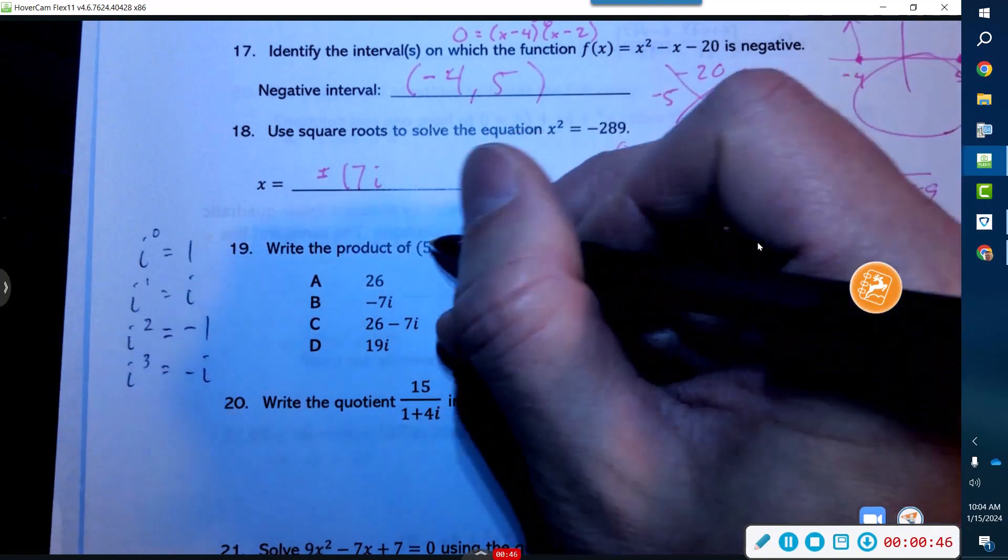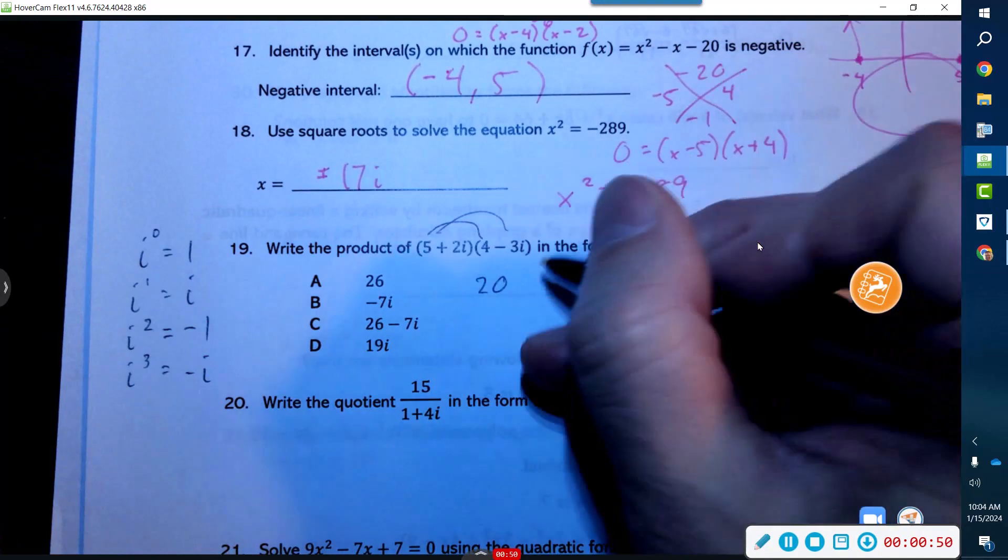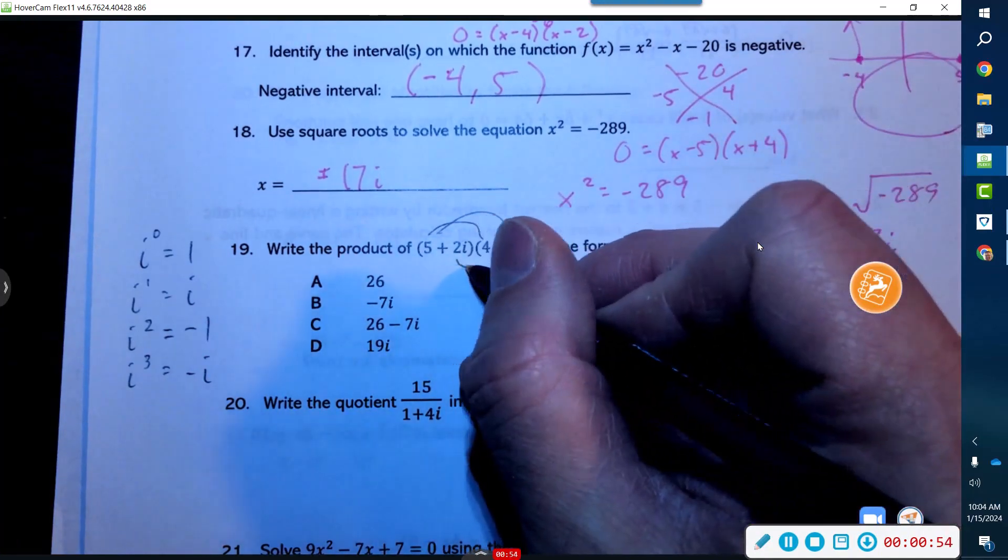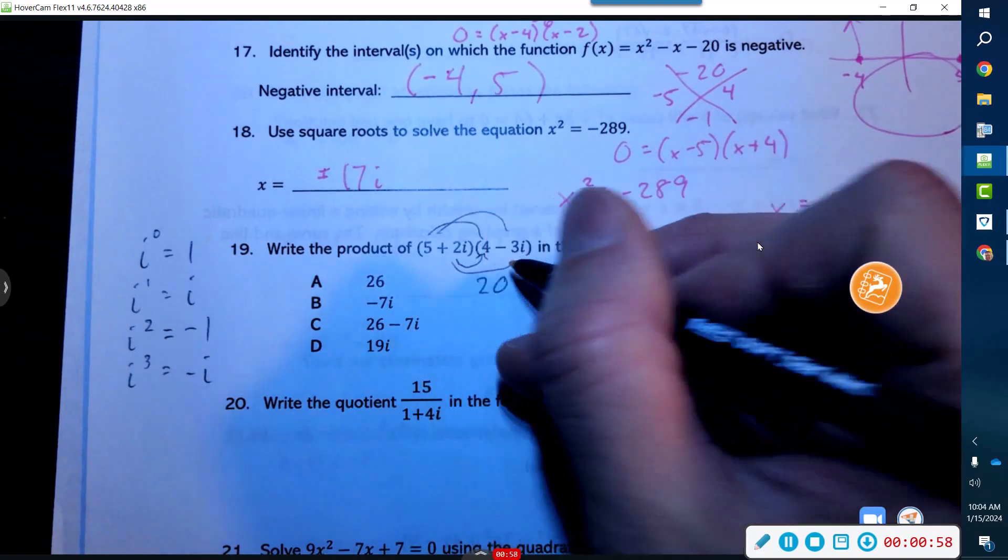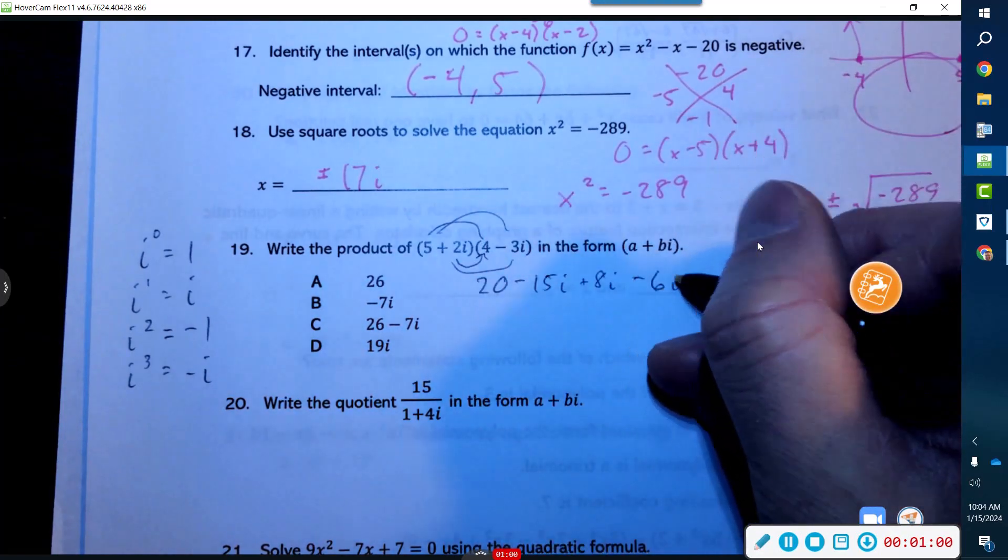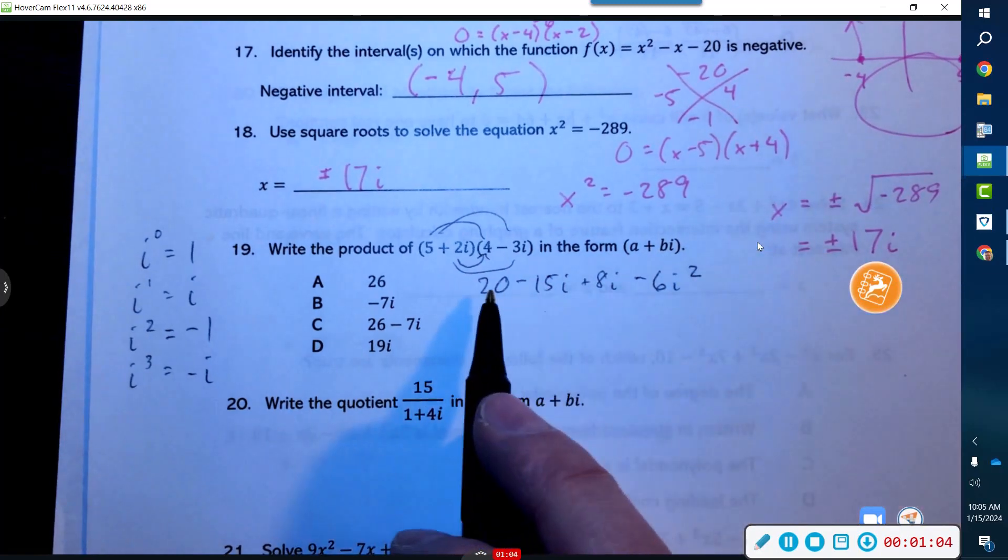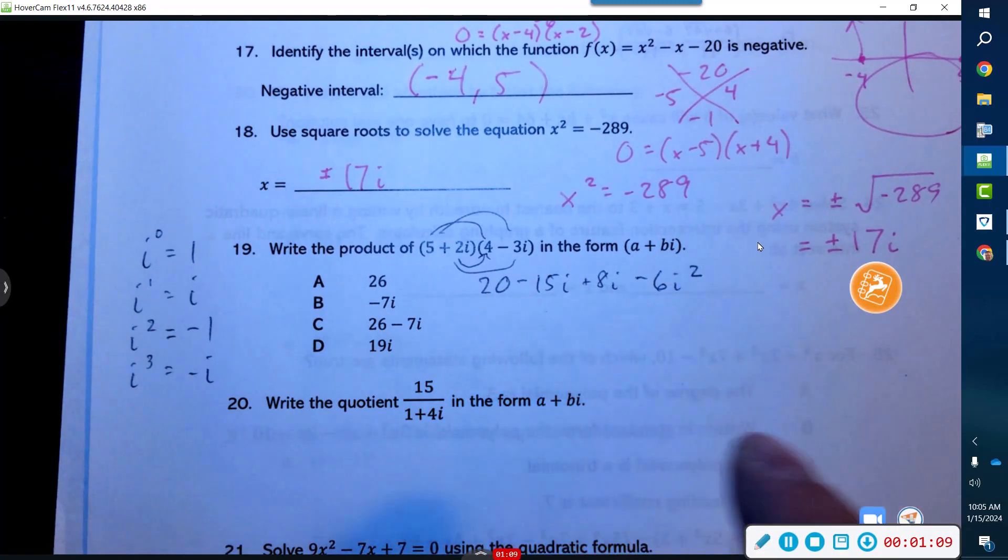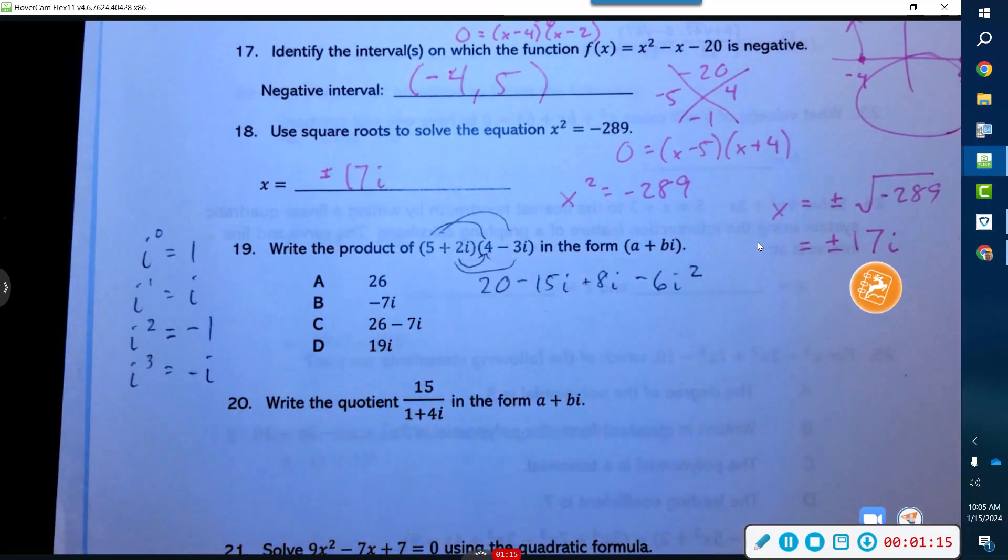So here we go: (5 + 2i)(−3i + 4). We're just gonna FOIL it. Five times this gives us −15i, then this second guy 4 gives us 20, plus 8i, and then this becomes −6i squared. This format's gonna happen every time: you're gonna have a real number, two imaginary parts, and then an i squared.